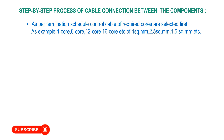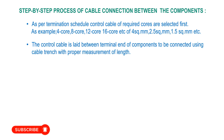As per the termination or cable schedule, control cables of the required number of cores are selected first — for example, 4-core, 8-core, 12-core, or 16-core — of 4mm², 2.5mm², or 1.5mm² cross-section. Then the control cable is laid between the termination ends of the components to be connected, using the cable trench with proper measurement.